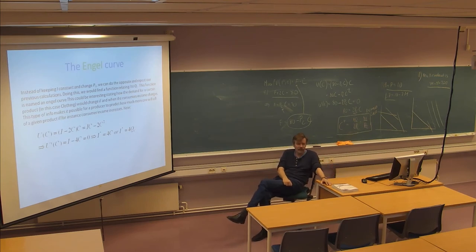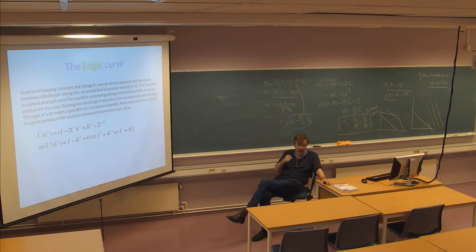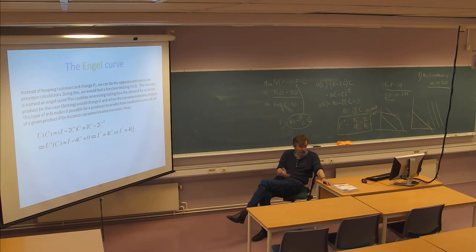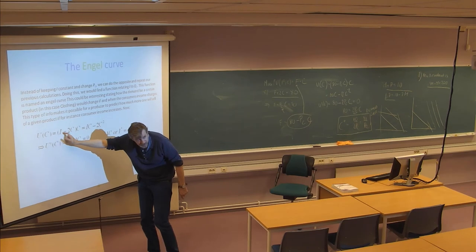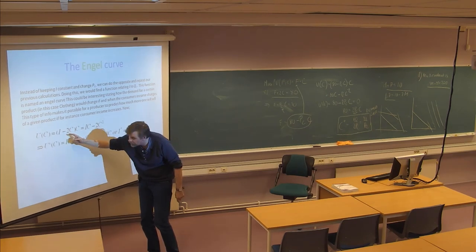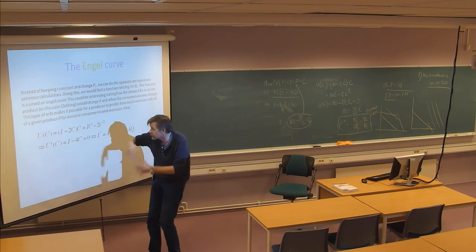There's something called the Engel curve. Engel was perhaps a German economist many years ago. Of course, instead of keeping I constant and changing PC, we can do the opposite and repeat our previous calculations. Instead of thinking of PC as the variable, we can think of I as the one which changes - as the parameter here. Then of course we can do the same kind of calculation.